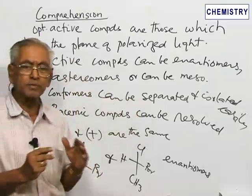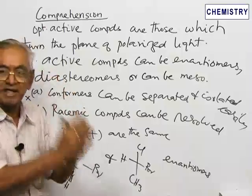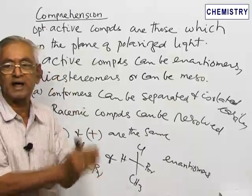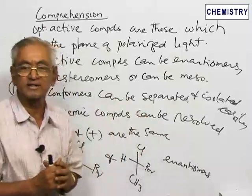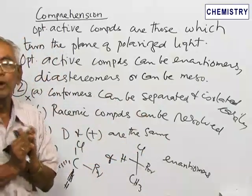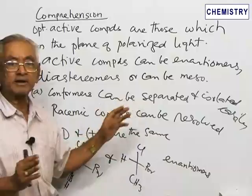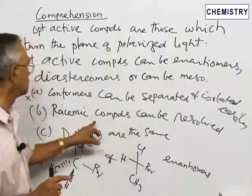Racemic compounds mean what is the racemic compound? Racemic compound is a mixture of D and L. A D configuration is there, L configuration is there, or D rotation is there, L rotation is there. It is a mixture of the two and therefore, the D rotation and L rotation, that is what is known as a resolution.